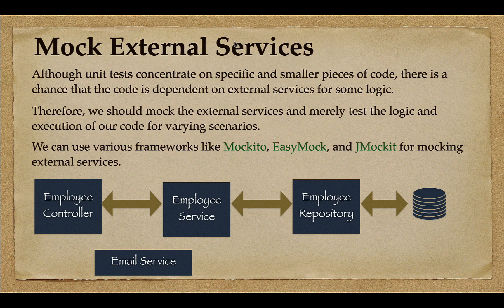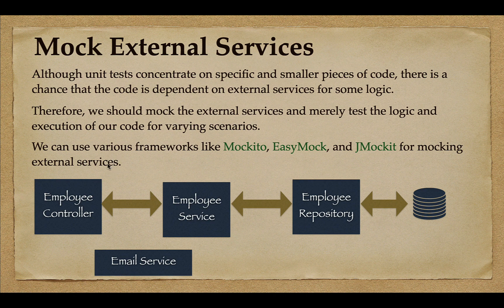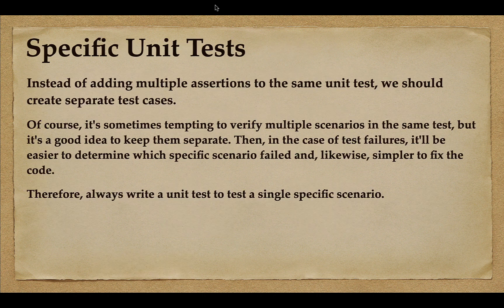The next best practice is to mock external services. When unit testing a specific piece of code, that code may depend on external services. For example, when unit testing an EmployeeController that depends on EmployeeService and EmailService, we must mock those external services. We can use frameworks like Mockito, EasyMock, or JMockit for mocking, and in this course we will use the Mockito framework to mock dependencies.